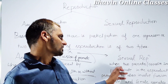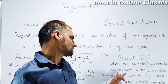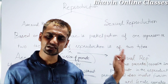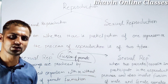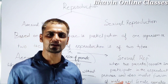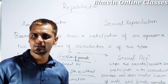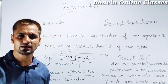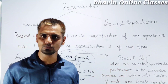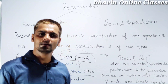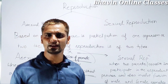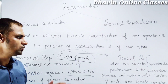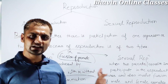In sexual reproduction, two parents of opposite sex participate. It is necessary that male and female reproductive structures be present. For example, in the case of the animal earthworm, the same individual has both male and female reproductive structures. These are the two generalized definitions.